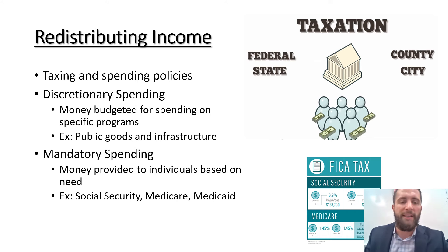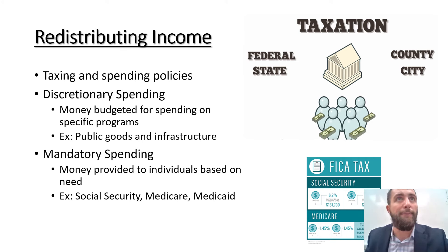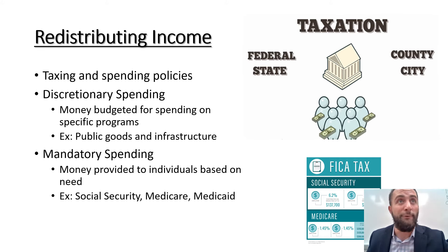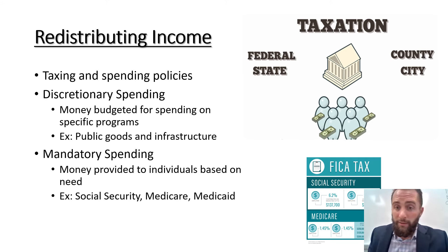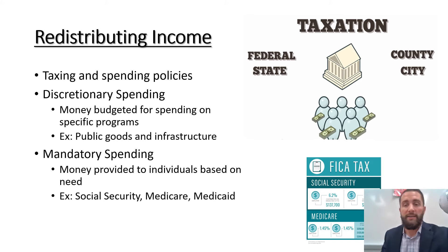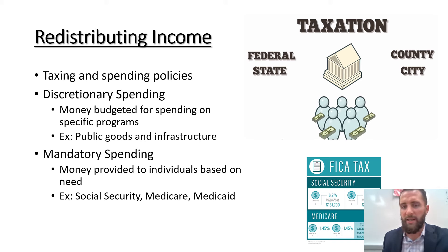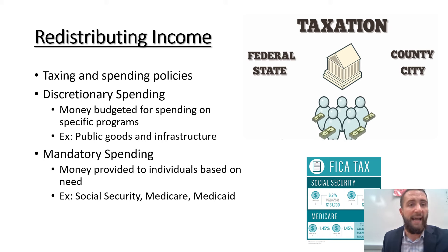The fourth function that government plays in our economy is redistributing income. This deals with taxing and spending policies. The big thing to keep in mind is that if we let wealth inequality become too great in our country, it will strongly destabilize the country and can ultimately lead to violent revolution — just ask the Roman Empire. What government does is ensure that certain people don't get too rich and others don't become too poor through redistribution programs such as welfare, food stamps, Medicare, Medicaid, and Social Security. Those three items — Social Security, Medicare, and Medicaid — make up almost half of our government's budget on their own, so this is a huge reason for government spending.